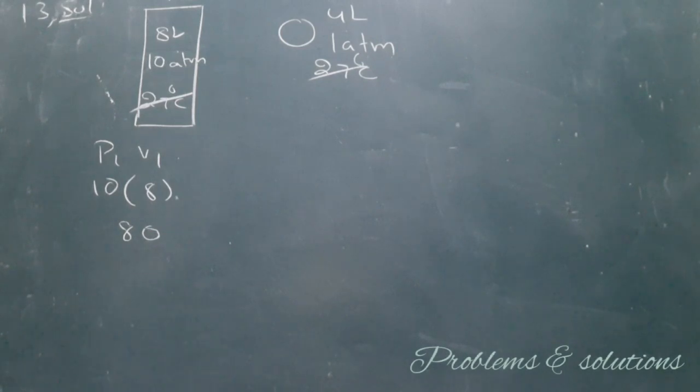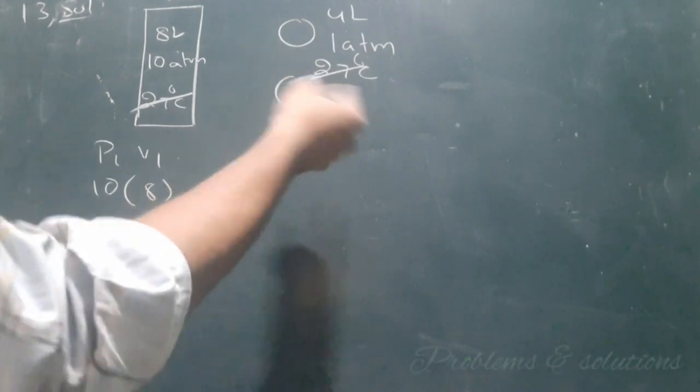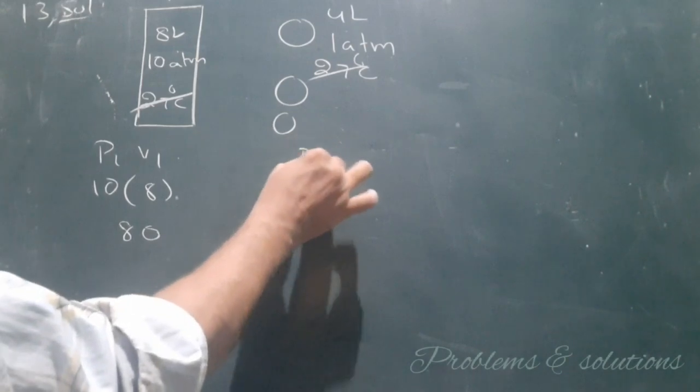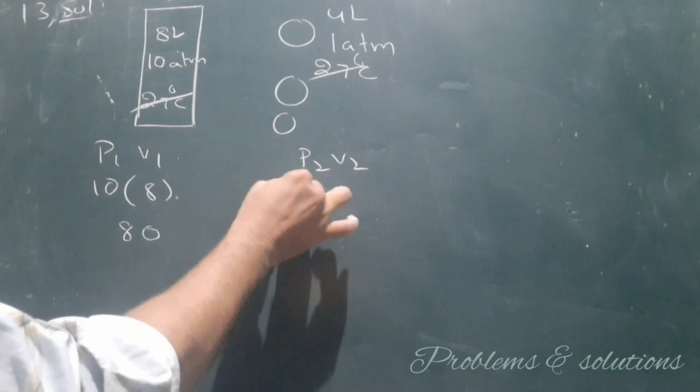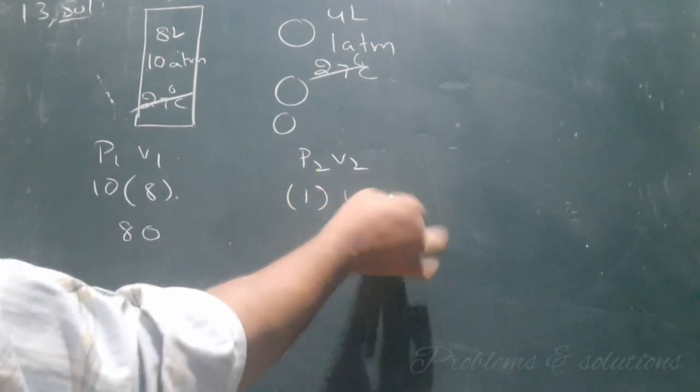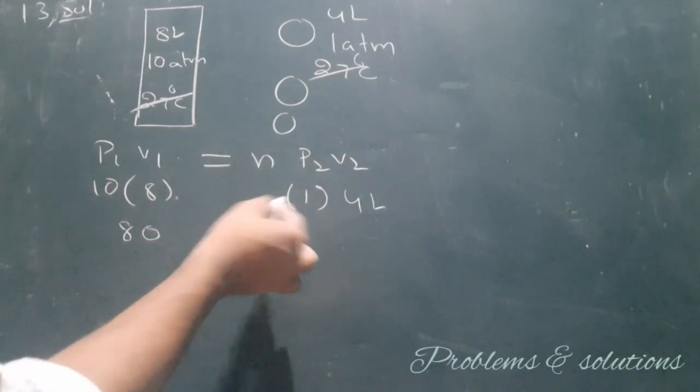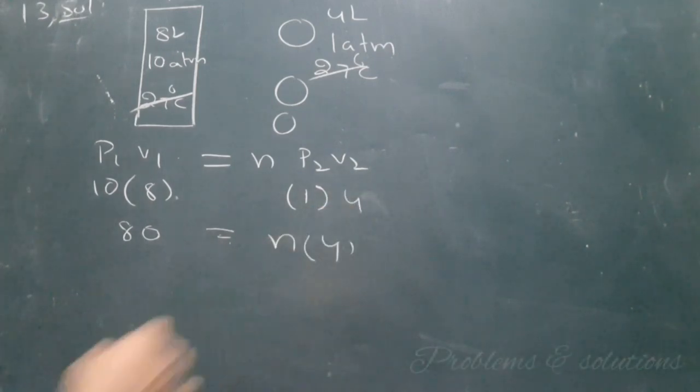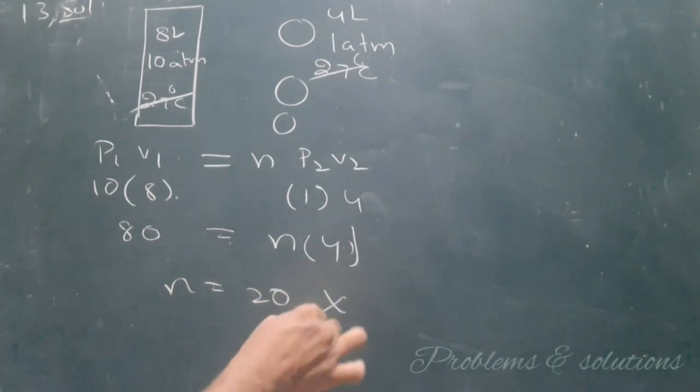So we have to transfer this gas into small balloons. Each balloon has amount P2V2, so each balloon has 1 atmospheric pressure and 4 liters volume. So how many balloons do we require? Simply by using this formula, P1V1 equals n times P2V2. So n times 4, n equals 20. It's the wrong answer.